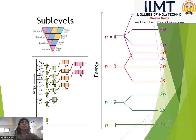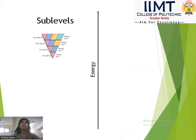For n=1, we have 1s. For n=2, we have 2s and 2p. For n=3, we have 3s, 3p, and 3d. For n=4, we have 4s, 4p, 4d, and 4f.